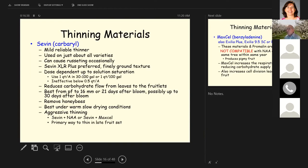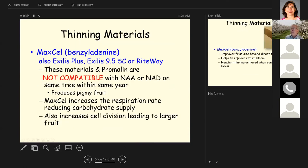Seven is best used under warm, slow drying conditions. And as I mentioned before, for aggressive thinning, you can add seven plus NAA or seven plus Maxell. This is the primary way to thin late in the fruit set period.